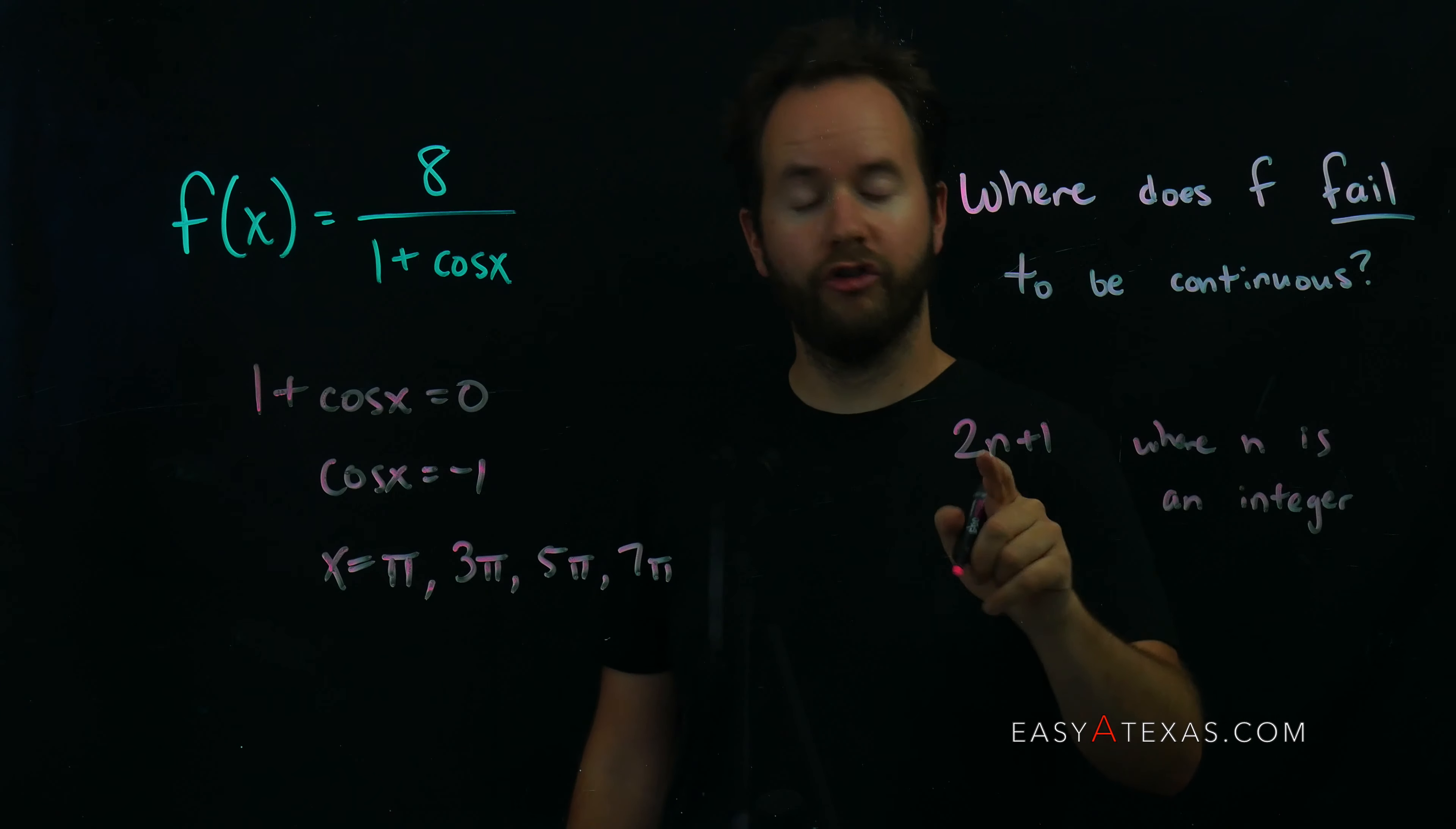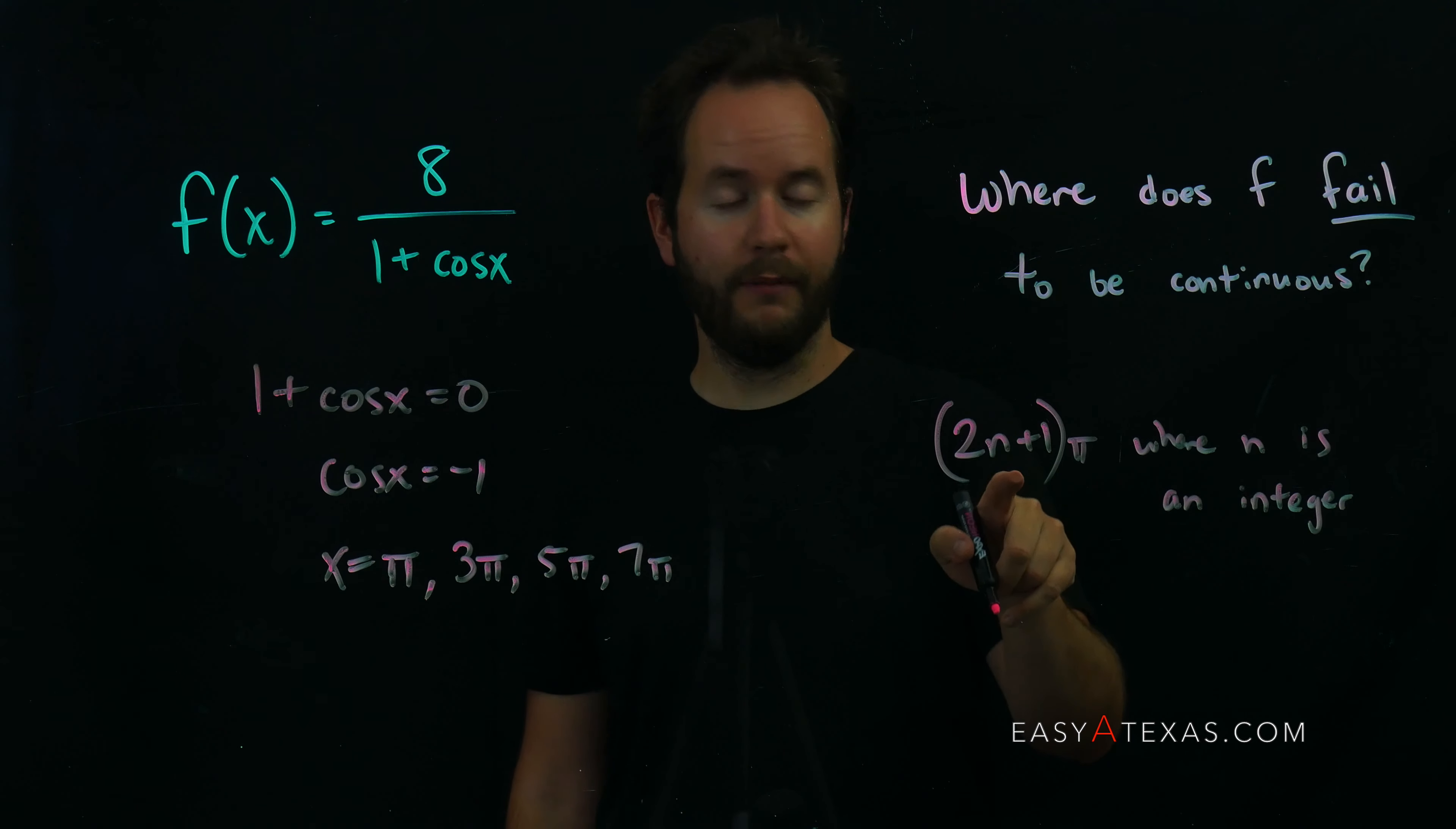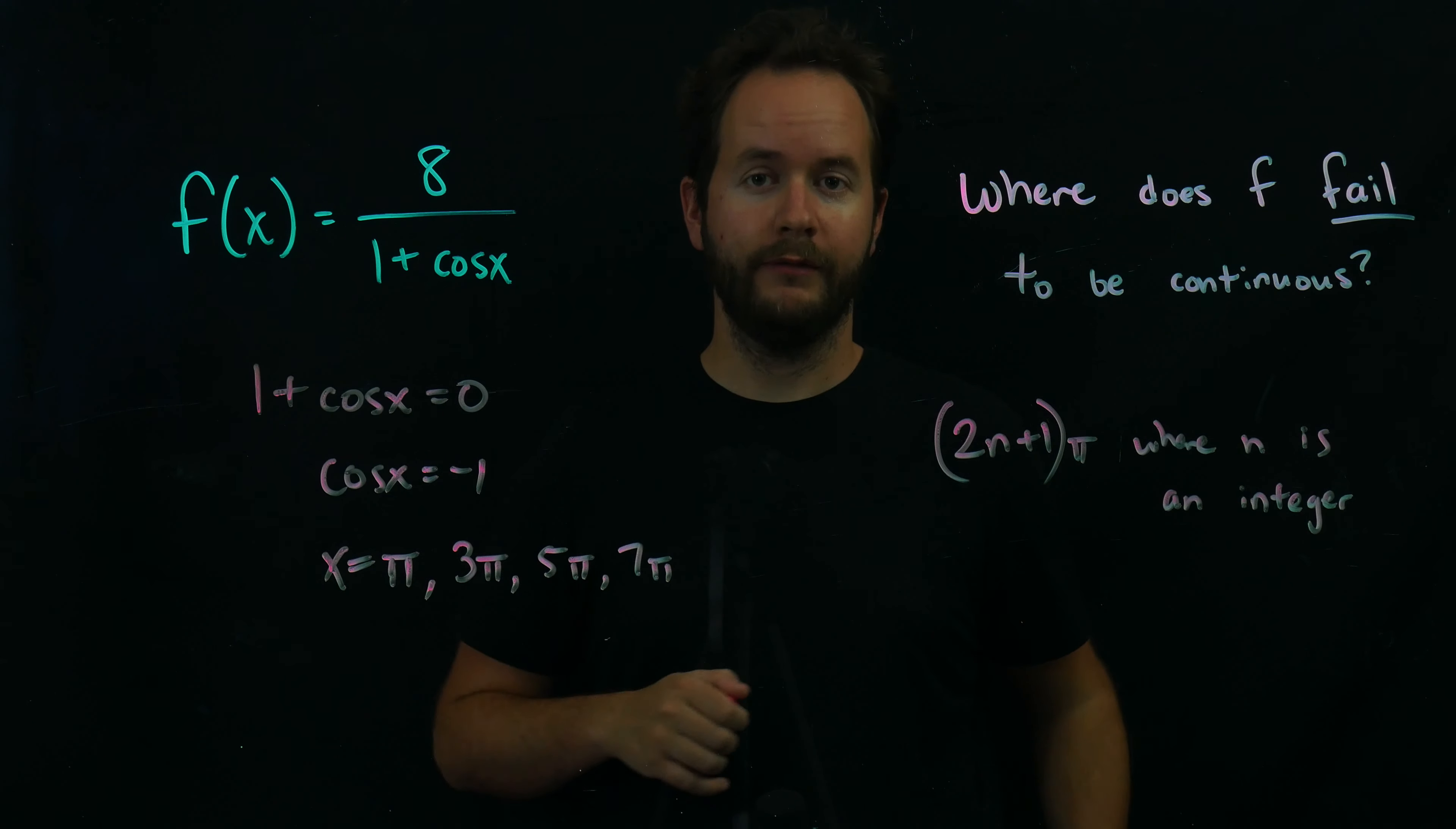This, no matter what integer you pick, 2n plus 1 will be an odd number. So all I need to do is tack on a pi, and this would be my answer. This is an odd number times pi. That's where cosine of x is equal to negative 1, which causes this fraction to be discontinuous.